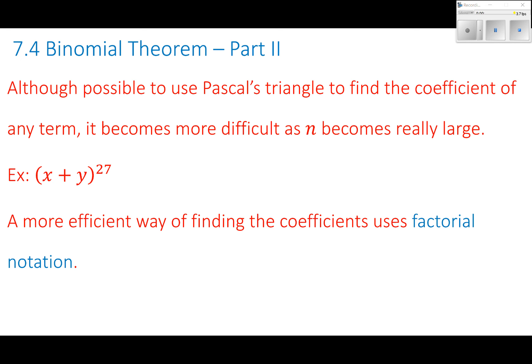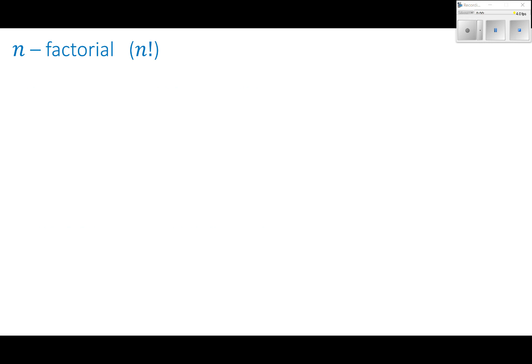So part one, we talked about Pascal's triangle to find the coefficient of any term, but it becomes more difficult as n becomes really large. For example, if I want to know x plus y raised to the 27th, I would have to go down on my triangle really far to get to 27.